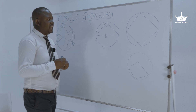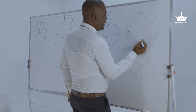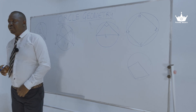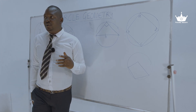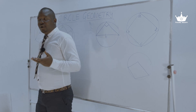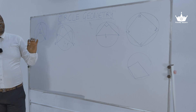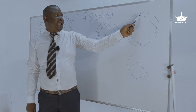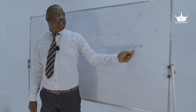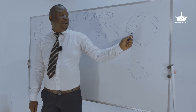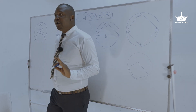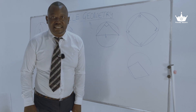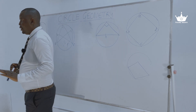In cyclic quadrilaterals we have two theorems. Let me label the angles A, B, C, and D. The first theorem: the opposite angles in a cyclic quadrilateral are supplementary — they add up to 180 degrees. So if you take A and C, they add up to 180; B and D, they add up to 180. A plus C equals 180, B plus D equals 180, because these are opposite angles in a cyclic quadrilateral and they are supplementary.